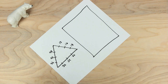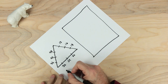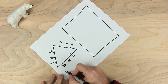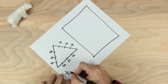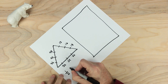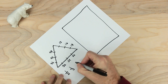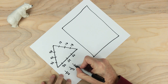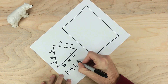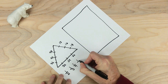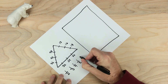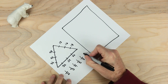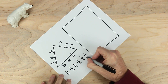We're also going to need some special numbers. Let's write those down here: one half, one third, one fourth, one fifth, one eighth, and one tenth.